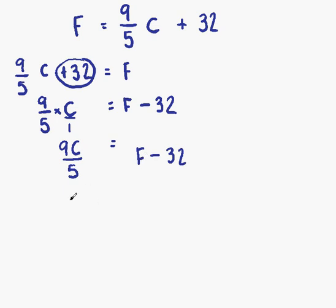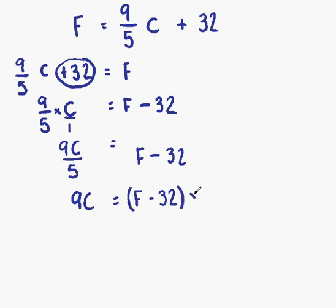The best thing to do next is to try and move this 5. We have 5 on the bottom, so if we move it to the other side, it changes from divide to times. So we have 9C on the left, and F minus 32 on the right. 5 was dividing on this side, so when we change sides it changes to multiply. So we have 9C equals 5 bracket F minus 32.